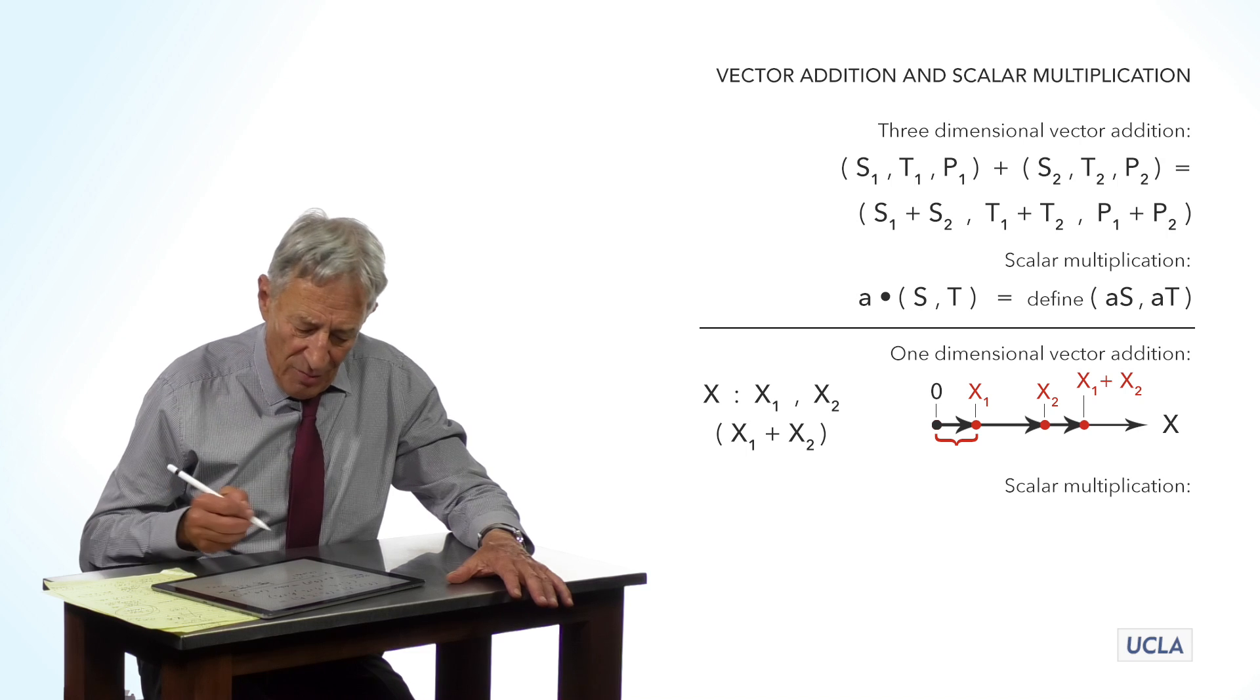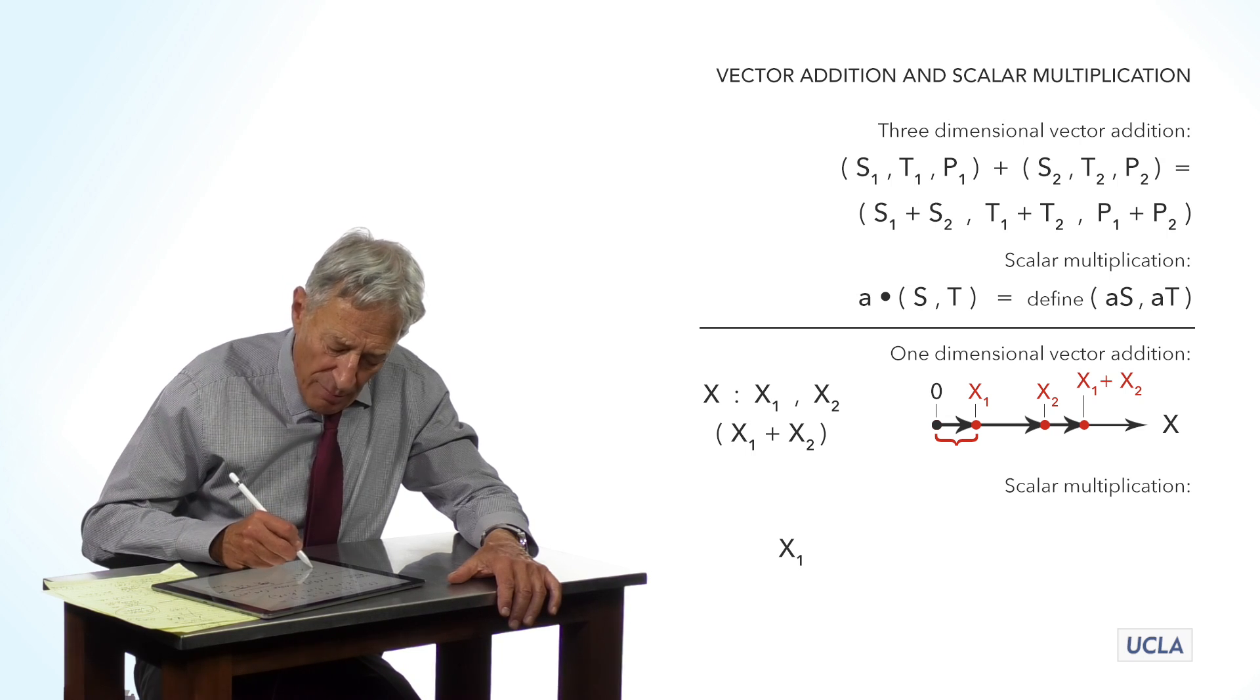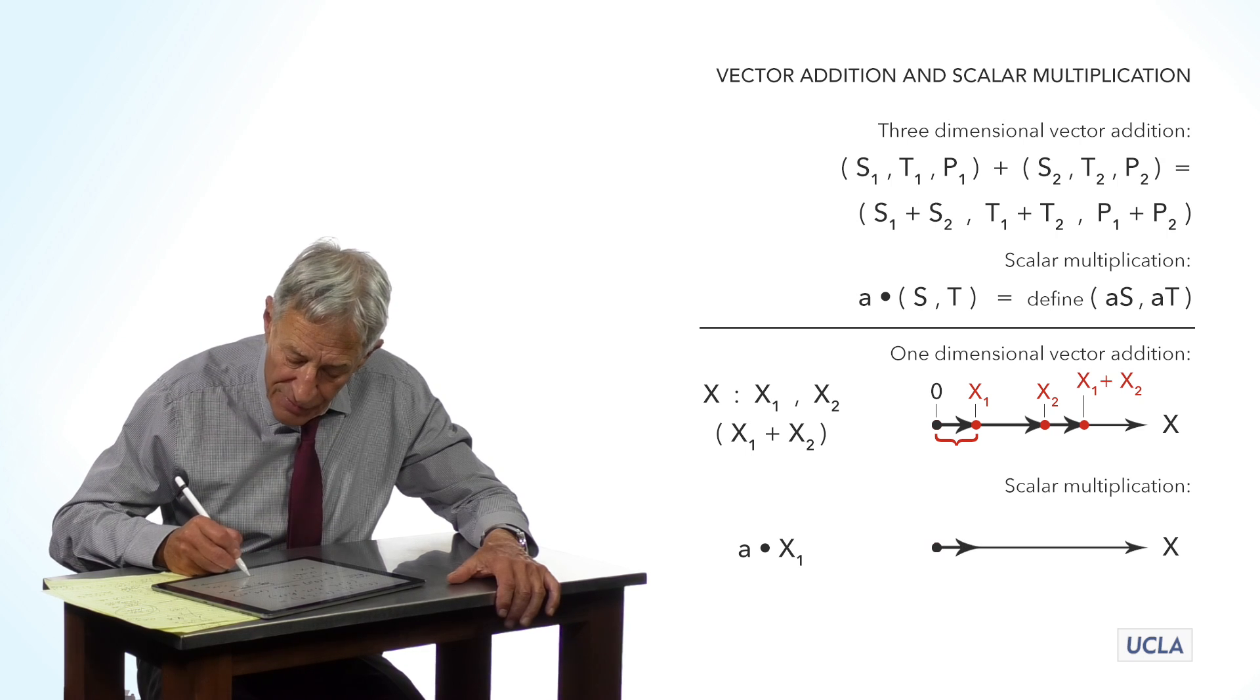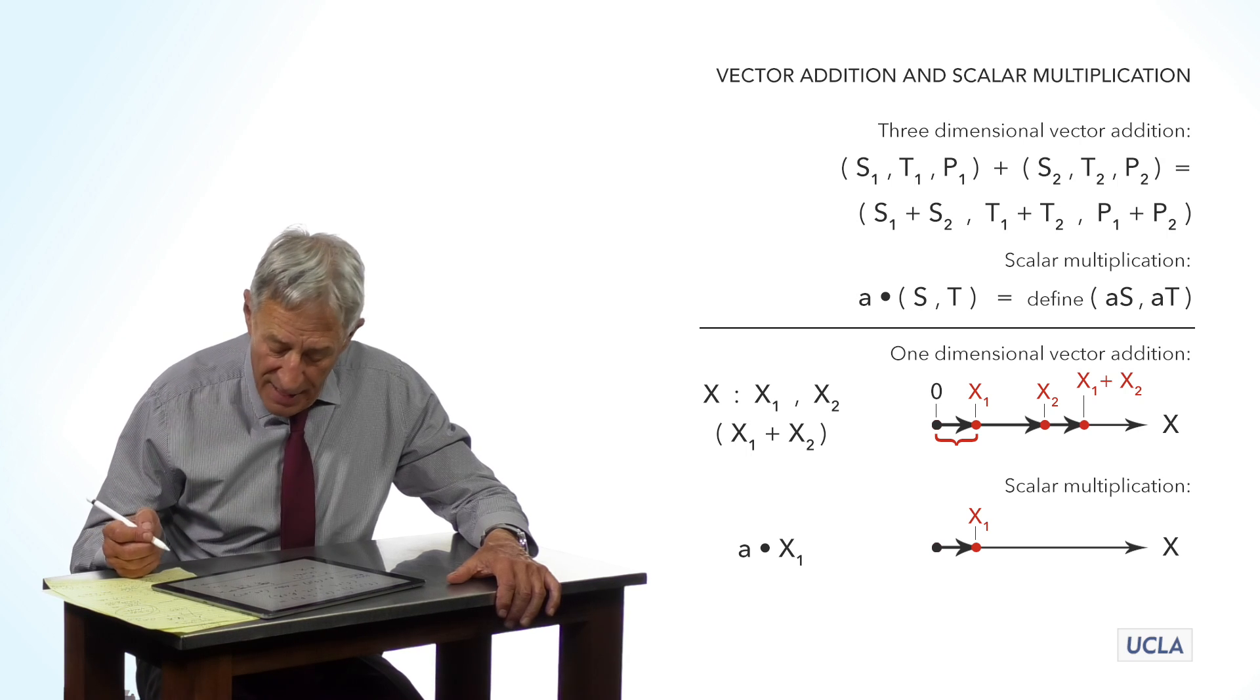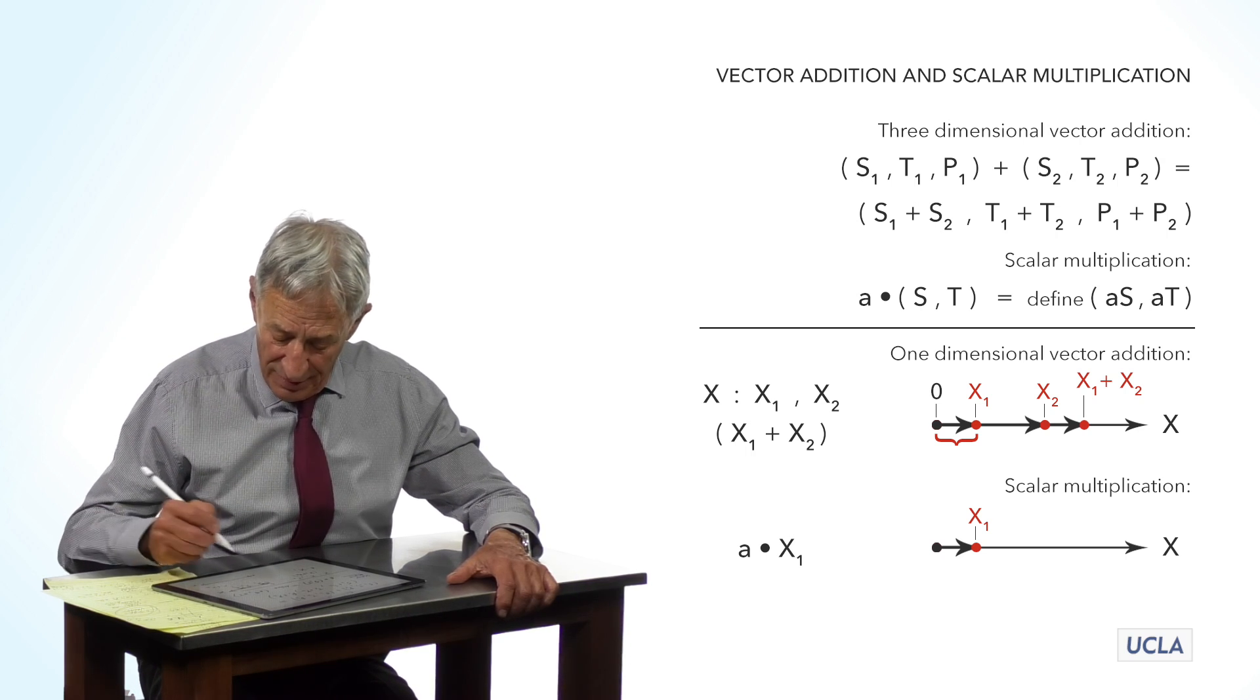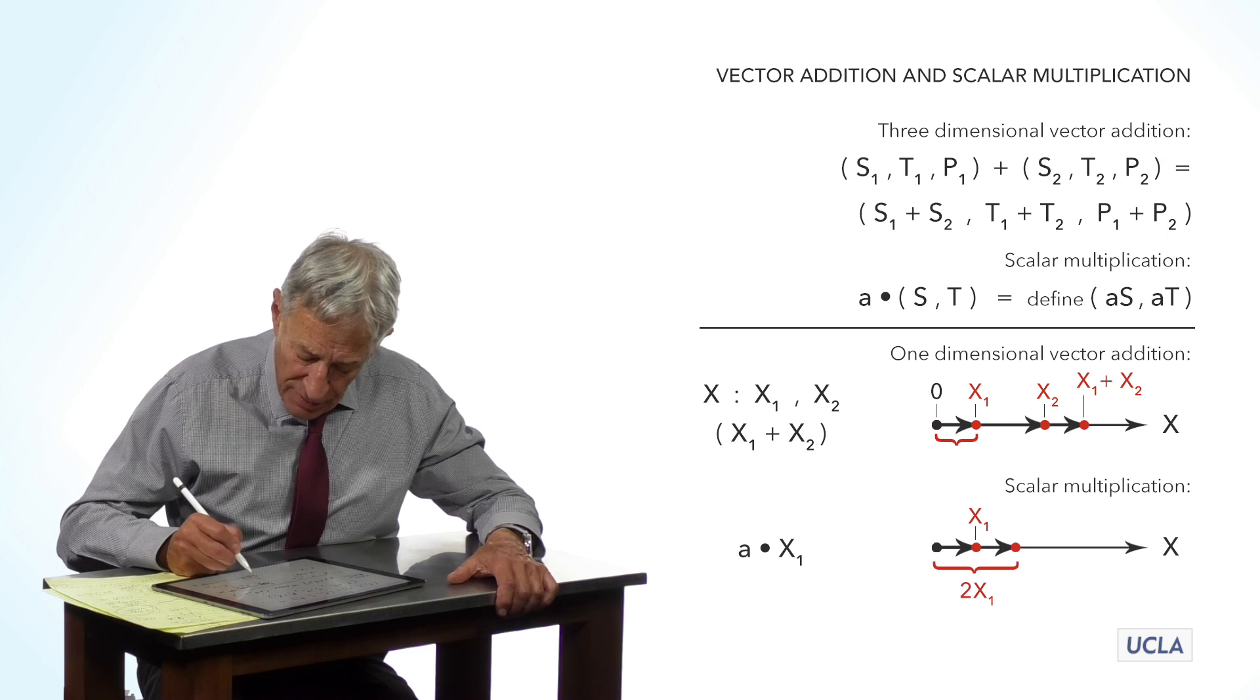What about scalar multiplication? Well, we have a state x1. We're going to multiply that by a scalar. What does that correspond to geometrically? Well, here is the vector x1. And a x1 is just the vector whose length is a times the x1 length. So if a is 2, then 2ax1 is going to look like that.